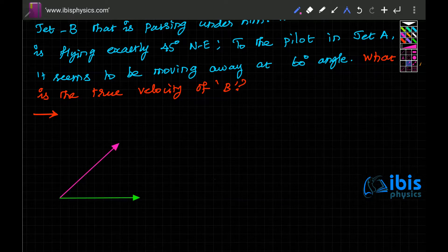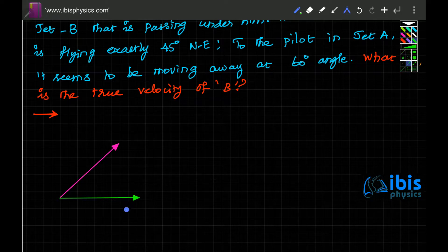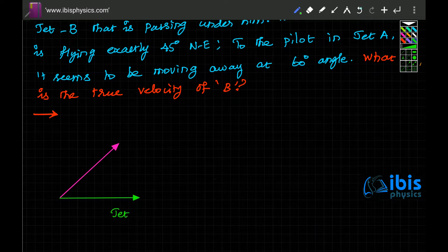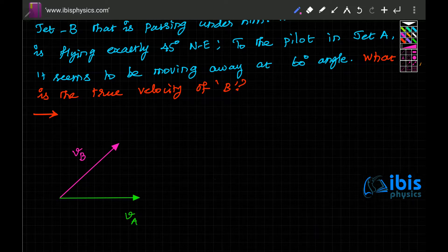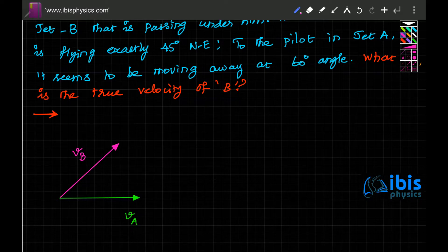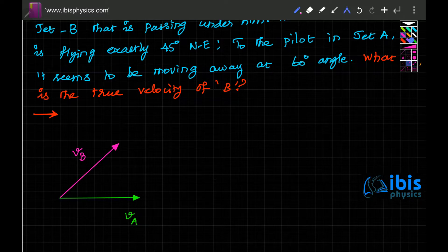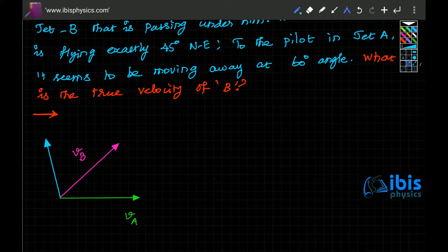To jet A, the fellow in green is jet A. This is velocity of A, and this one is velocity of B. But for jet A, the velocity of B is actually 60 degrees. That means it seems to be like this at 60 degrees. This is velocity of B with respect to A, VBA, at 60 degrees.